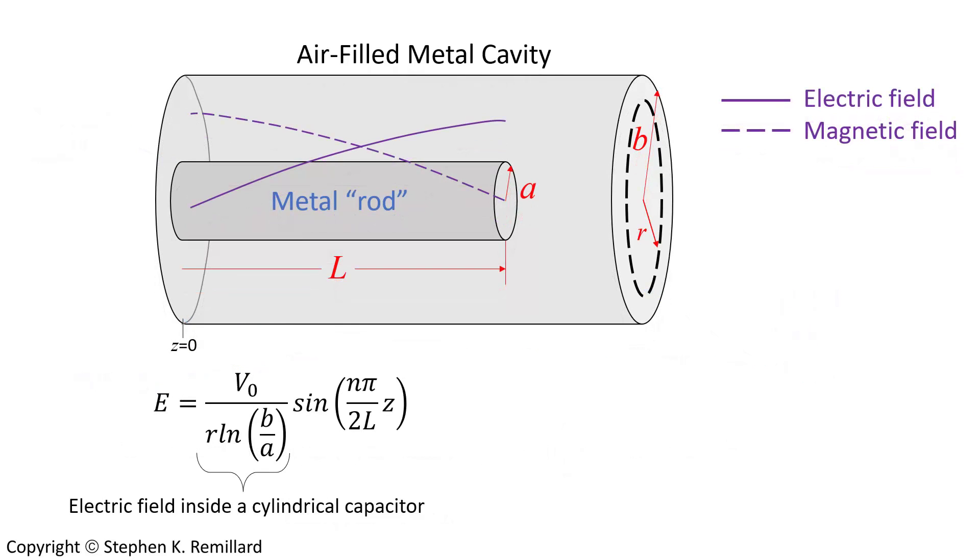The expression for the electric field comes right out of first year physics. There are two factors in this expression. The factor on the left you might recognize as the expression for the electric field inside of a cylindrical capacitor. The factor on the right accounts for the z dependence, where z is the direction along the rod. Z equals zero at the base of the housing. The magnetic field also comes right out of a general physics textbook. From Ampere's law, the magnetic field between two concentric conductors carrying current, or the magnetic field inside of a coaxial cable, is the factor on the left. The cosine provides the z dependence of the magnetic field.